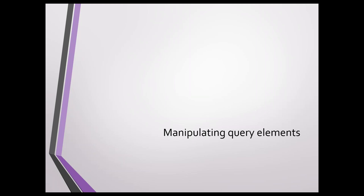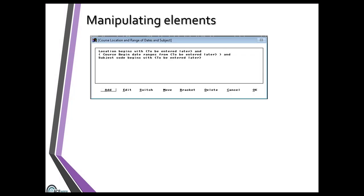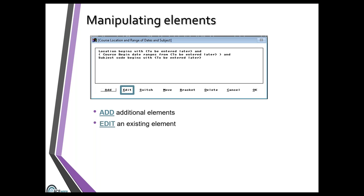Now we're going to talk about manipulating query elements. This is our query editing screen where we're adding or removing fields. To add additional elements we have the Add button. In this example you've got elements like a location, a course begin date, and a subject code. Maybe we want to add the instructor — 'and' or 'or' — and if it meets on a certain date we would use an And.